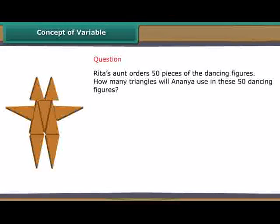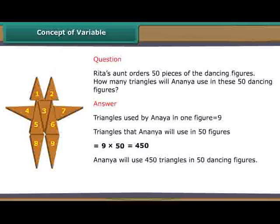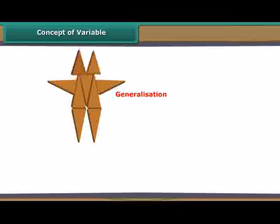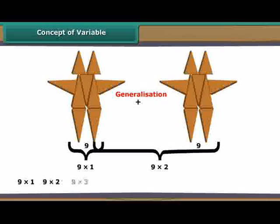Ananya uses 9 triangles in 1 figure. In 50 dancing figures, she uses 9 times 50. The triangles Ananya uses in a single dancing figure are fixed. However, the total number of triangles used by her varies depending upon the number of dancing figures she makes. We can, therefore, generalize.